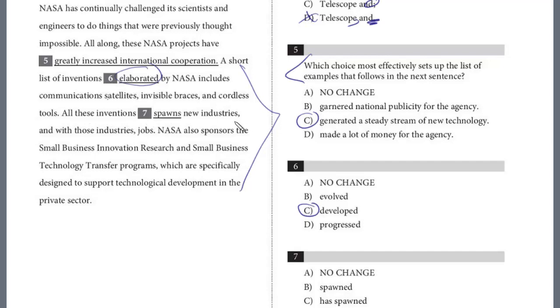All these inventions spawns new industries, and with those industries' jobs, NASA also sponsors the small business innovation research and small business technology transfer programs, which are specifically designed to support technological development in private sector. So spawn, by the way, is the same word as develop, right? They have created these new industries. But this, if you look at the choices, is testing tense. All of these inventions spawned present tense. Do we want the present tense? So let's look for clues in the sentence. Remember, in six, we changed that to developed. It's past tense. And we also have, let's see, all these industries are specifically designed to support, right? This is, we want to be parallel here. We want past tense. And we also had generated in question five. These are all past tense. So look for clues in the sentence, and we just simply want spawned. And we'll see you next time.